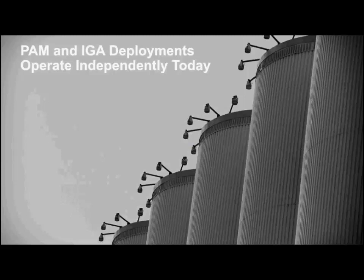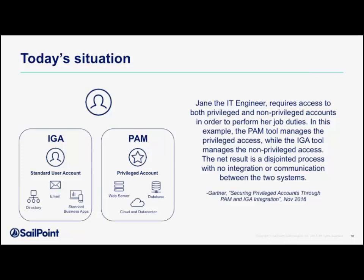Unfortunately, these solutions are operating independently today, and that sets up a situation which even Gartner has called out as being problematic. Here you've got Jane, the IT engineer. She has standard privileges provided by an isolated IGA system — her access to the directory, email accounts, and standard business applications. Because of her role, she also needs access to web servers, a database, cloud and data center facilities, and some shared accounts on those. But in a situation where these two systems are not integrated, these privileges are completely isolated with no ability to have centralized visibility or centralized control.